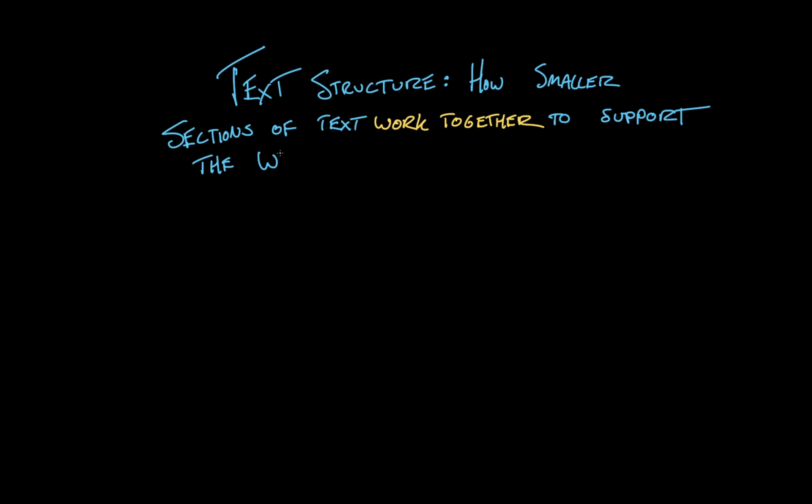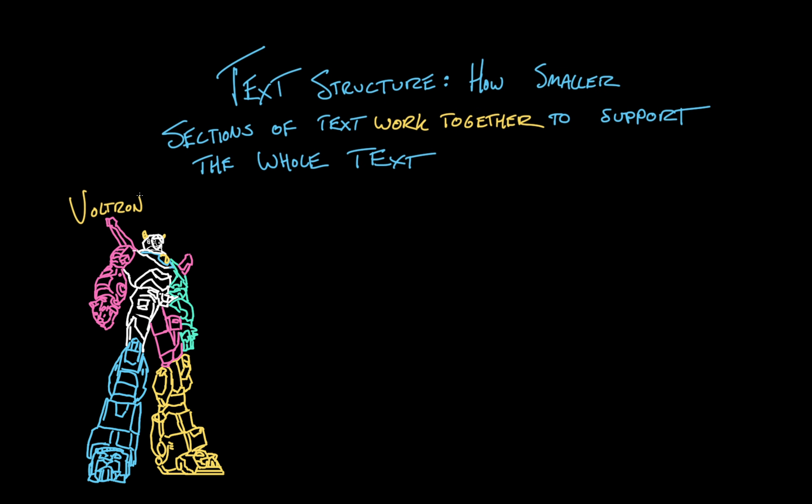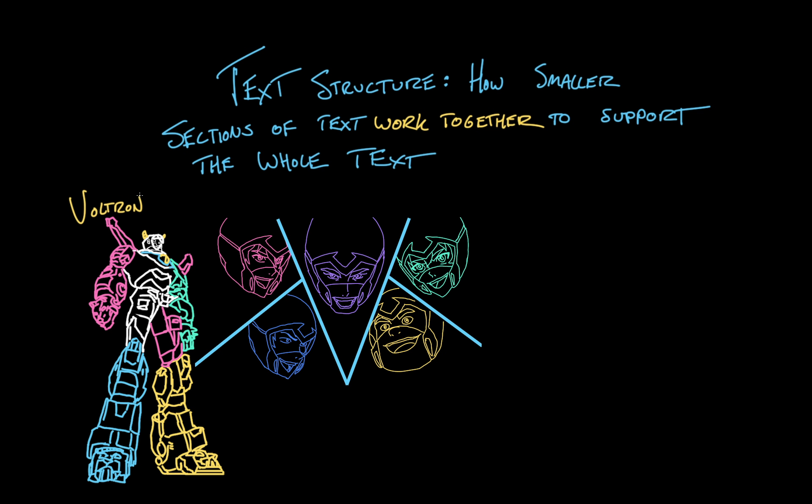But first, let us consider Voltron. It is a giant robot made up of five smaller robots, each one piloted by a person — five friends, each with control over a different part of the robot's body. You're up in the head, I'm operating the right leg, our buddy's operating the left, and so on.